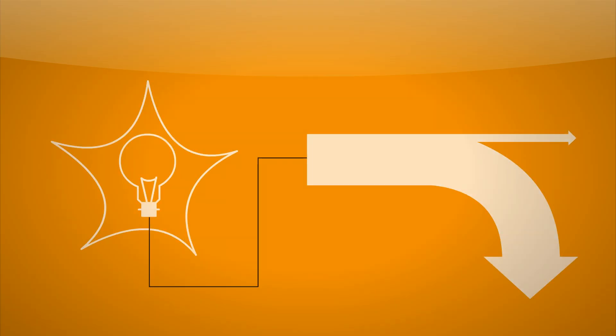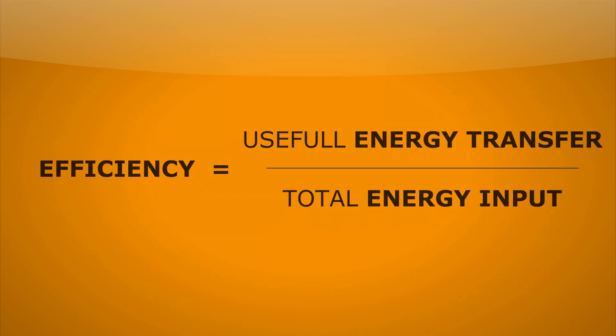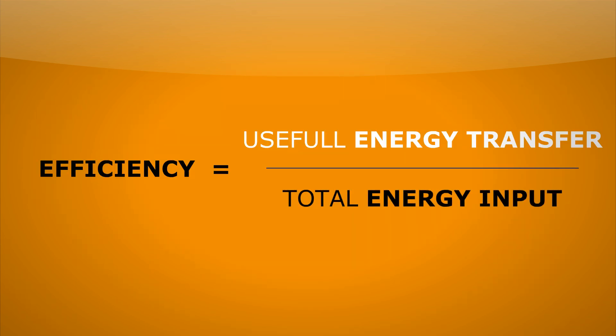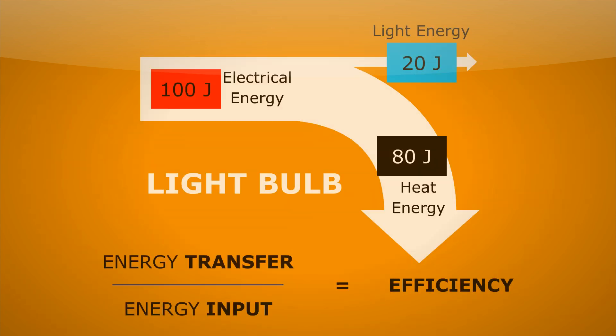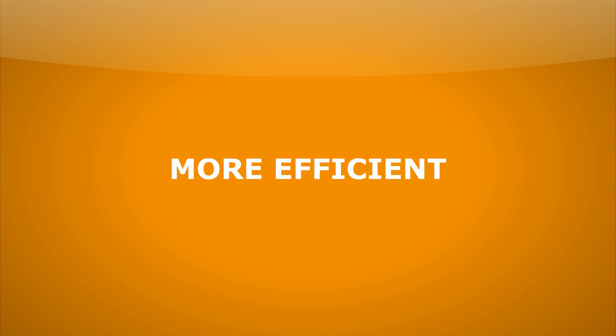It should be quite obvious from this diagram that the light bulb isn't actually very good at doing its job — we would say it's very inefficient. Us physicists like to define efficiency, and we do that by using this equation: efficiency equals useful energy transferred divided by total energy input. If we look at it for the light bulb, we find that 20 joules are usefully transferred out of 100 joules going in, so the efficiency is only 0.2. The closer to 1 the efficiency is, the more efficient the device and the more energy it transfers usefully.